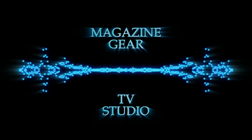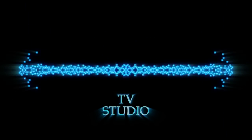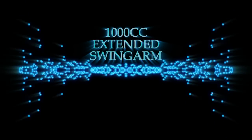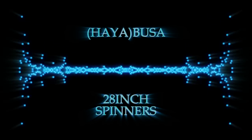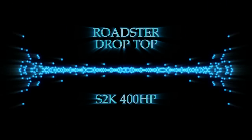Magazine, gear, TV studio owned. Thousand cc, extended swing arm. 28-inch spin as the swagger is a charm. Views of competition, we simply crush. S2K has 400 horses with us.